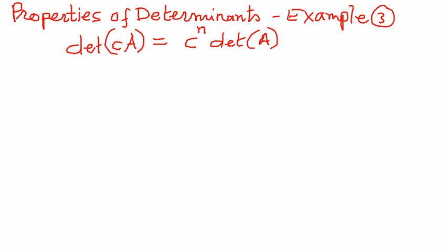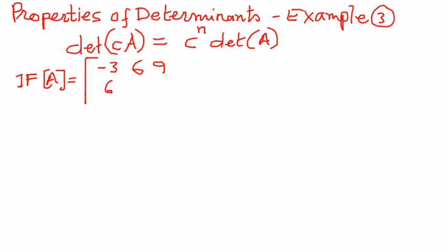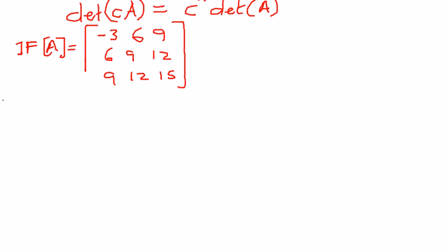Let's say we have a matrix of this type. The elements of this matrix are as follows: negative 3, 6, 9 in the first row; 6, 9, 12 in the second row; and 9, 12, 15 in the third row. This is the matrix we have, and we want to prove this property of determinants.